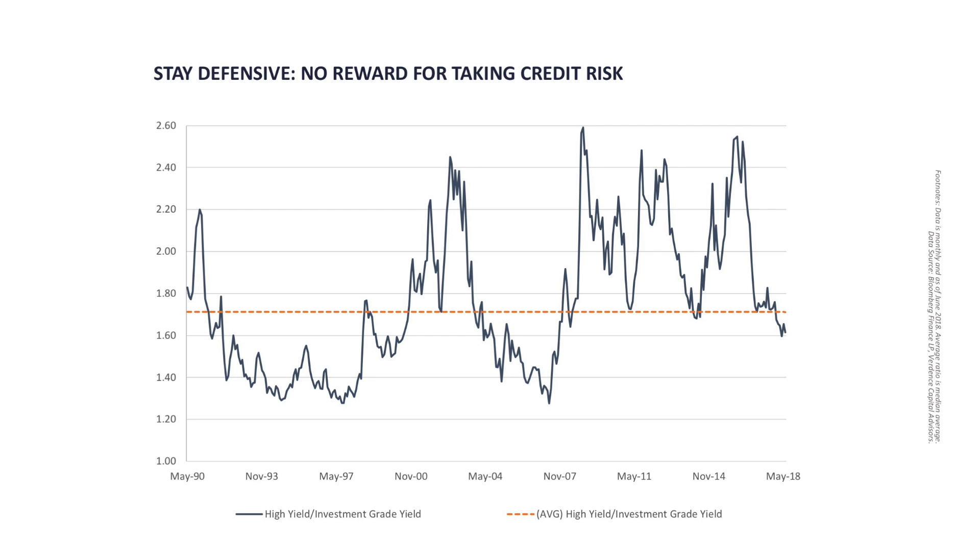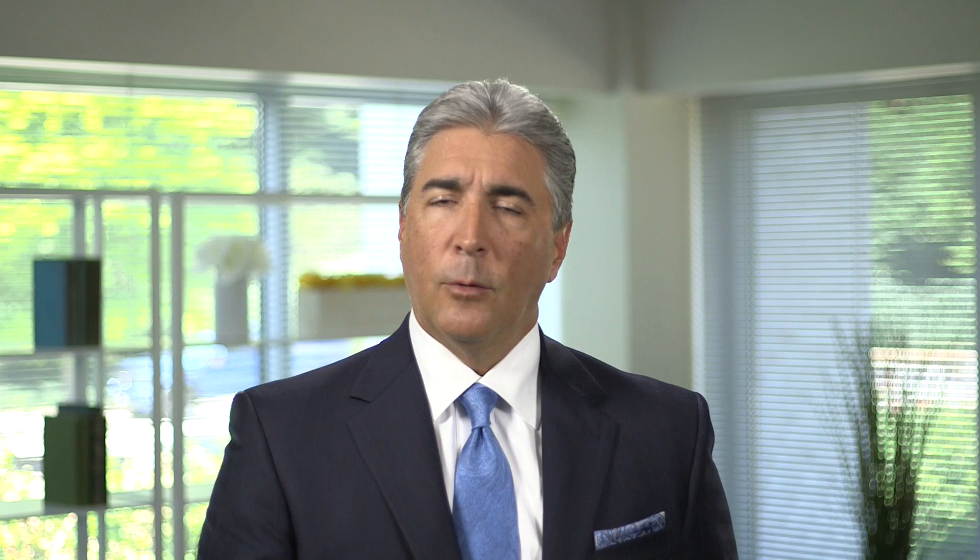Even though we're positive on the economy, we're just not getting paid for taking risk. And so we're going to remain very defensive in our fixed income portfolios. Stay away from risk. High quality. Stay short. Floating rates across the board so that if rates go up, our bonds don't go down. This is not a market that we want to take chances in when it comes to the fixed income markets.